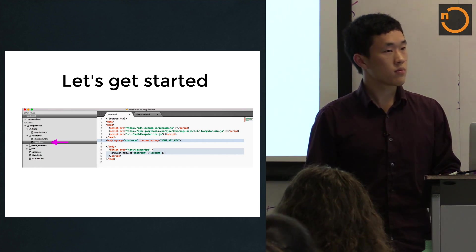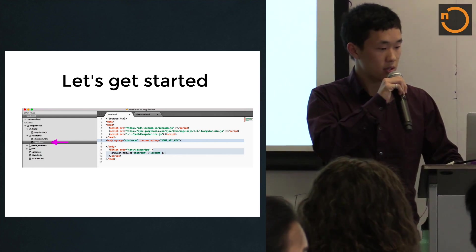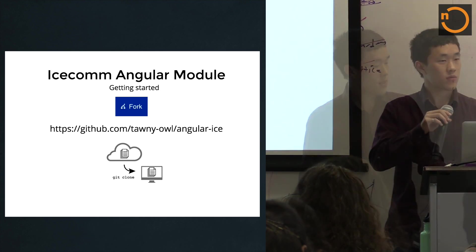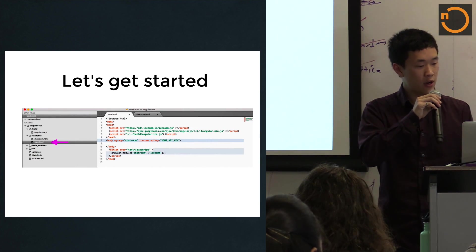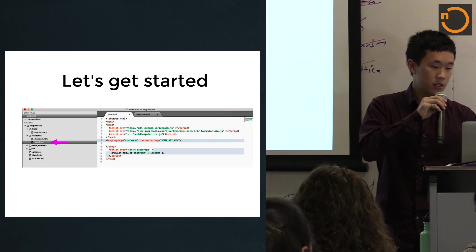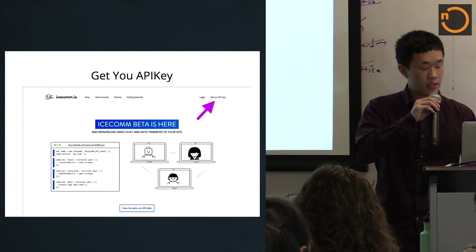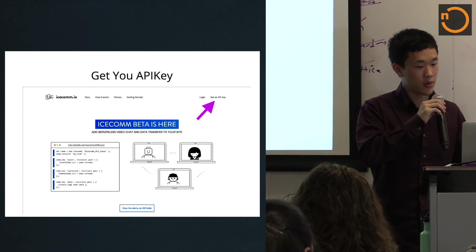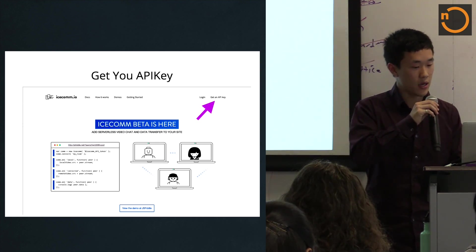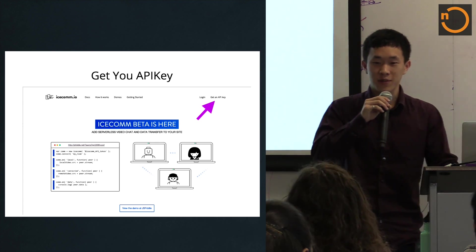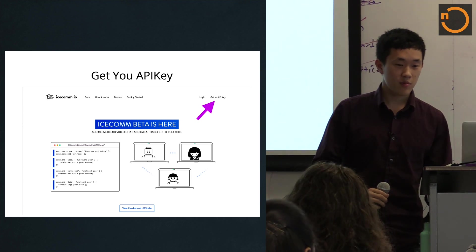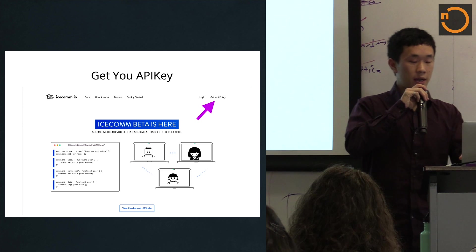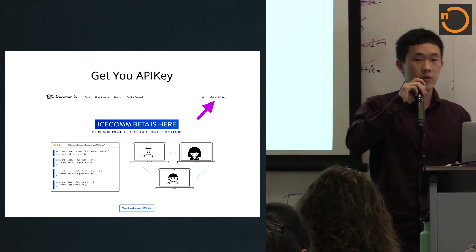Just jumping back a couple of slides to make sure everybody got that link. The next step is for everyone to get an API key so you can utilize Icecom's service. Just go to icecom.io and there's a tab to get an API key. It's really quick to sign up — it doesn't require any email verification and takes about five seconds. After you sign in, there's an account tab in the top right-hand corner and your API key will be right there.